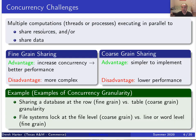In concurrency we have multiple computations. You can think of this as multiple threads within a single process or multiple processes cooperating using shared memory. Threads are defined as multiple concurrent entities all within a shared memory space. You can also have concurrency issues among processes if they are trying to use a shared resource or shared memory.